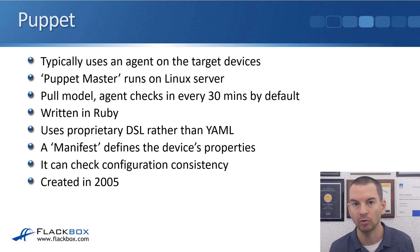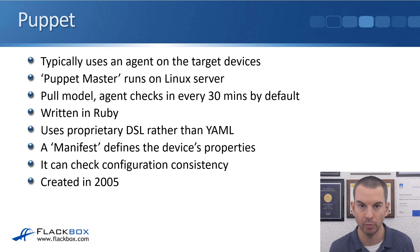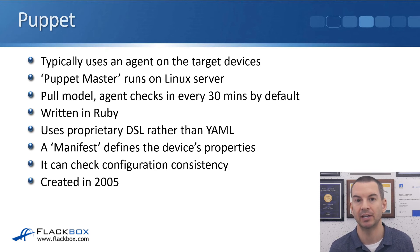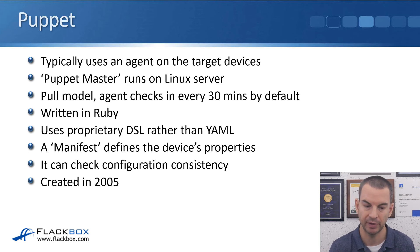Puppet is written in Ruby and does not use YAML like Ansible does — it uses its own proprietary DSL. The terminology in Puppet uses a manifest to define the device's properties. An advantage Puppet has over Ansible is that because it uses a pull model and devices periodically check in, you can use that to check for configuration consistency. With Ansible, it's essentially a one-time push to the devices, but with Puppet, every 30 minutes they're checking that their configuration is correct. Puppet is also more mature than Ansible, having been created in 2005.